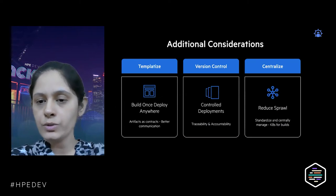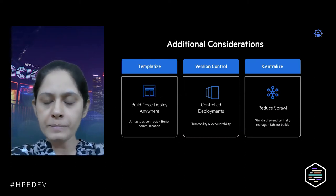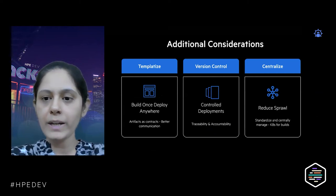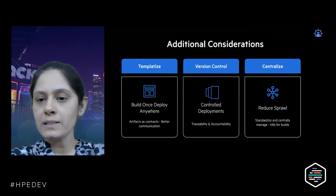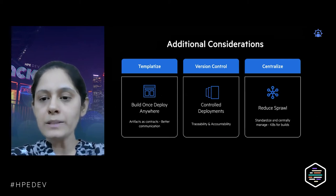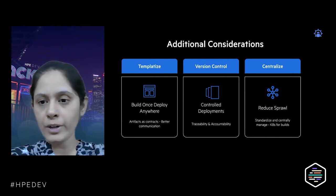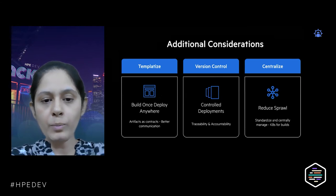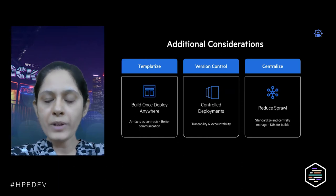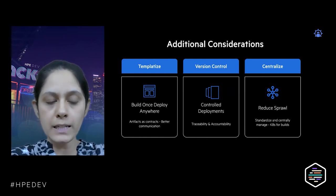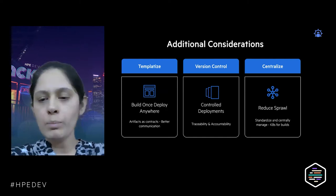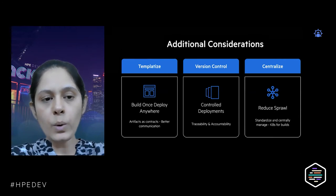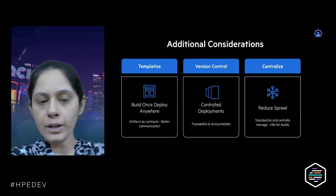The last key consideration is to templatize everything across all three stages — infrastructure, deployment, and data operations — so we can reuse it. When we ensure templates are portable across different environments, we can reuse the same templates for deploying across different environments. This becomes a contract between stakeholders. For example, using Helm charts, we can share a Helm chart with team members and they can use it to deploy across different build, staging, or production environments.